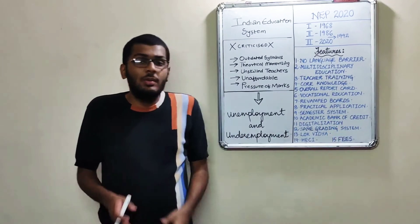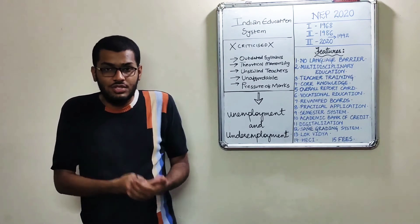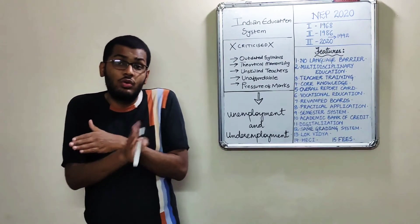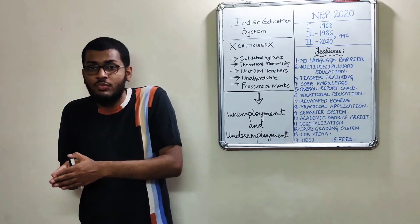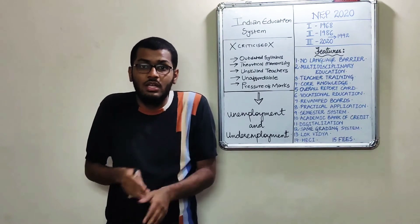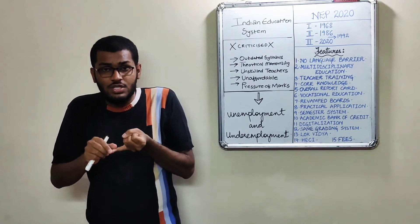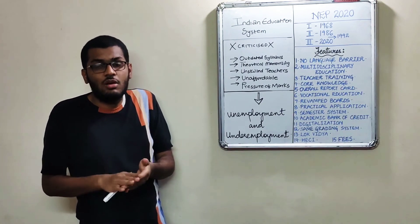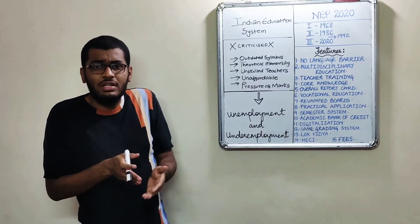Number ten is academic bank of credit. Academic bank of credit is a broad concept in which you have the option that, for example, you start graduation but due to any reason you can't continue it. So you won't have to study it from the starting if you want to continue in future. What you have to do is, whenever you stop, your credits will be stored in digitalized form, and whenever you resume, you can automatically continue from where you stopped. So in that process, if you do one year of graduation after twelfth, you get a certificate. Two years, you get a diploma. Three years, you get a degree. And four years, you get a degree plus research internship certification. So whatever stage you complete, you will get something.